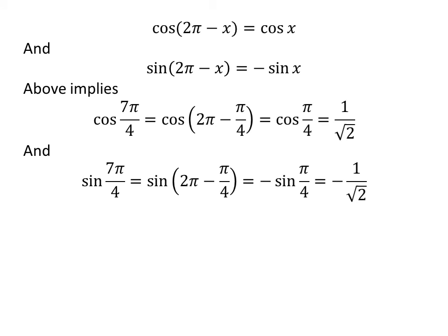So, the above implies cosine of 7 times pi upon 4 equals cosine of 2 pi minus pi upon 4, which equals cosine of pi upon 4, equals 1 upon square root of 2.